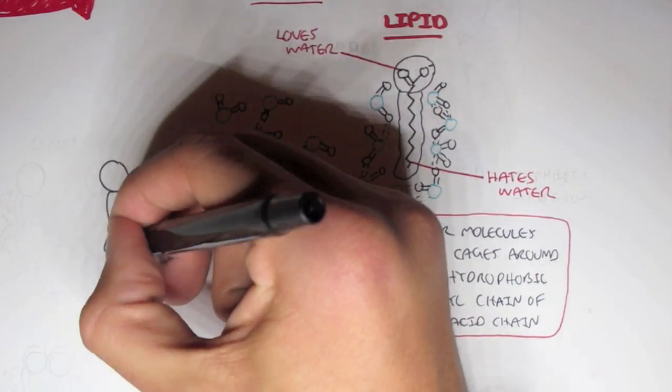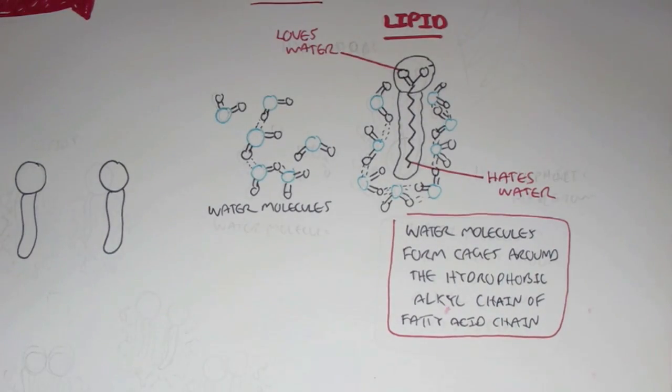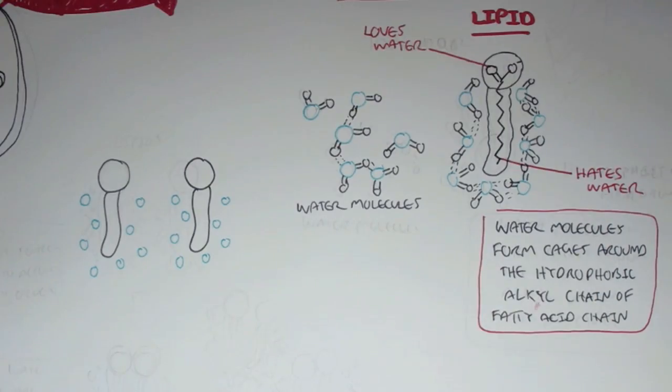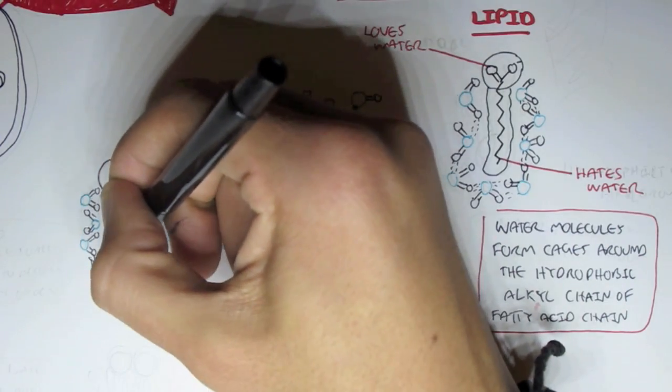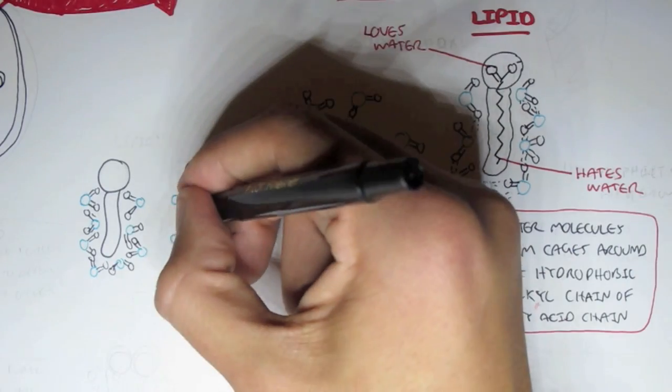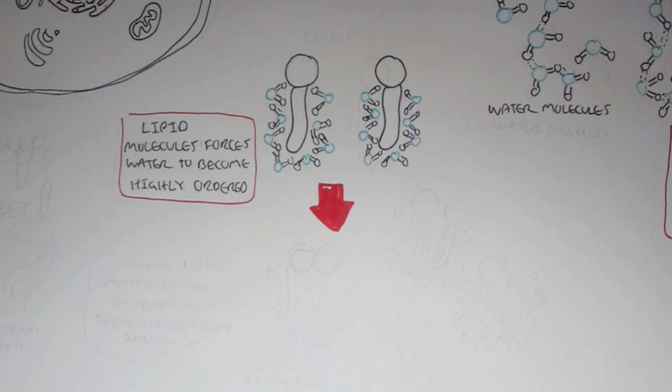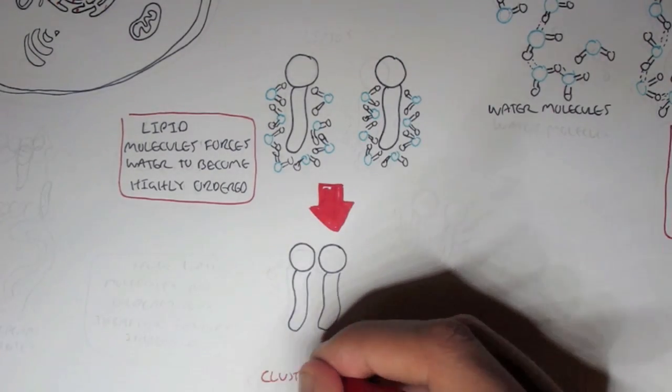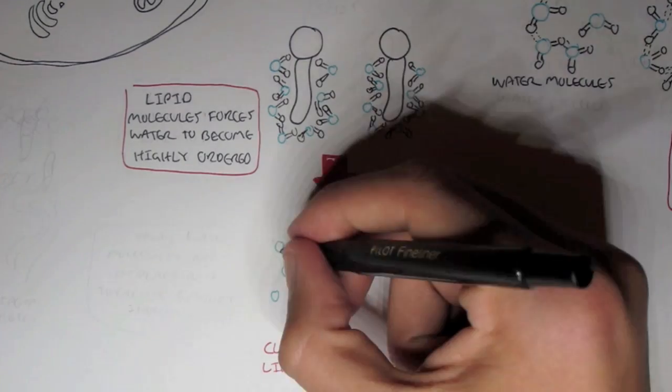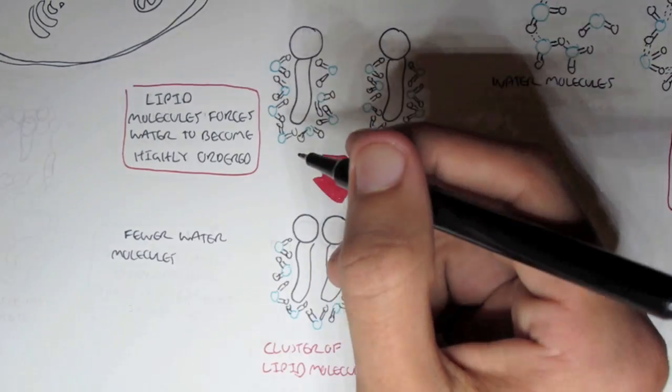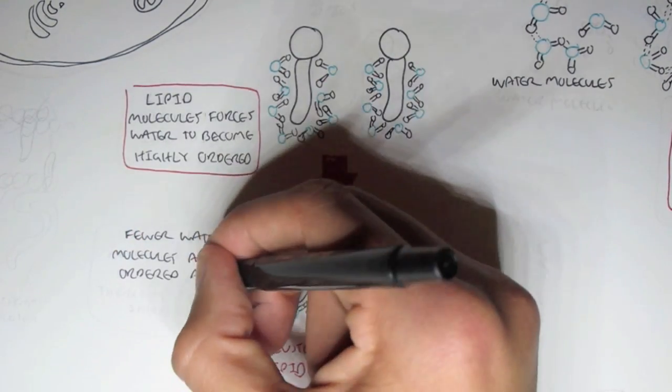Well, the water molecules will start surrounding the hydrocarbon chain and will not form bonds with it because it's hydrophobic. So essentially water molecules will form cages around the hydrophobic alkyl chain of the fatty acid because it can't interact. So for example if we have two lipids in solution, the water molecules will surround it, will cage it, and will not form bonds with it.